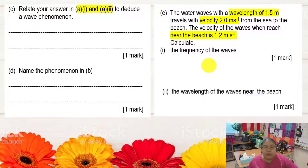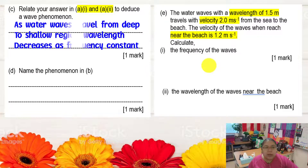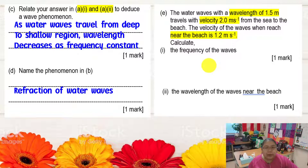Now relate answers A1 and A2 to deduce the wave phenomenon. As the water wave travels from the deep to the shallow region, wavelength decreases. Frequency remains constant — that must be mentioned because it relates A1 and A2. The wavelength and depth are dependent: deeper water means longer wavelength. The phenomenon described here is refraction of water waves.